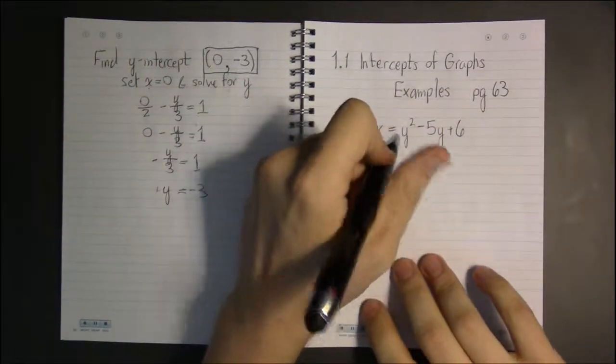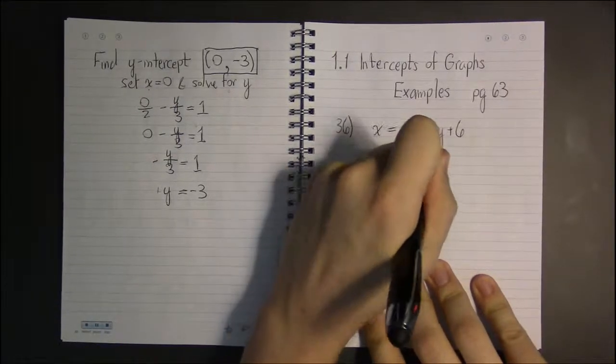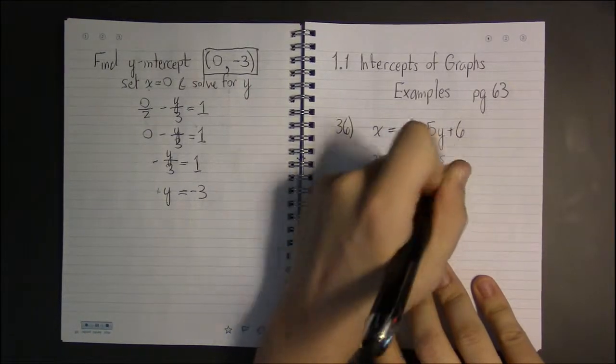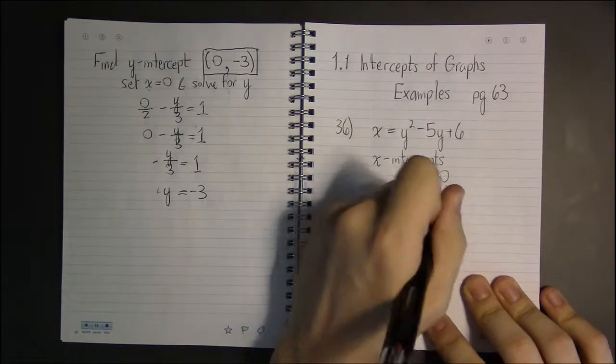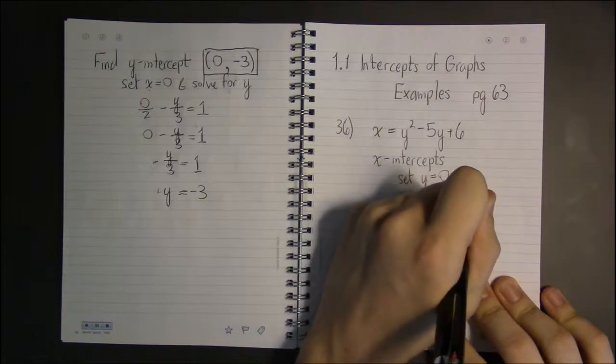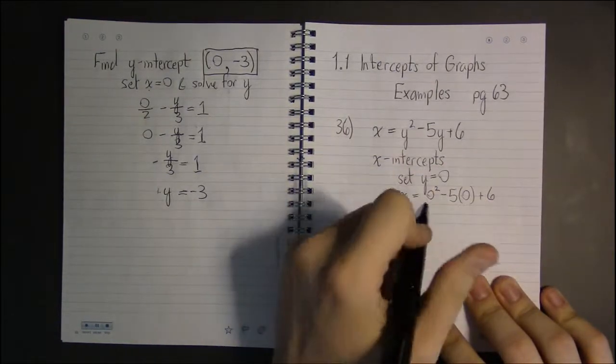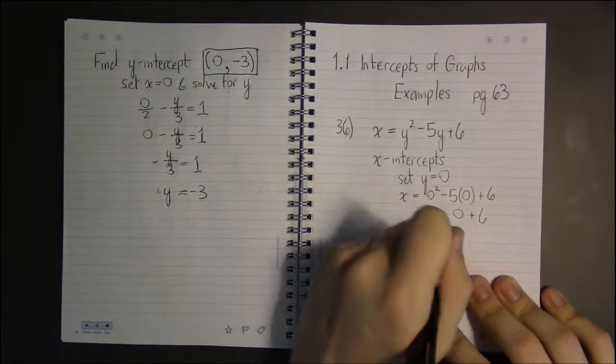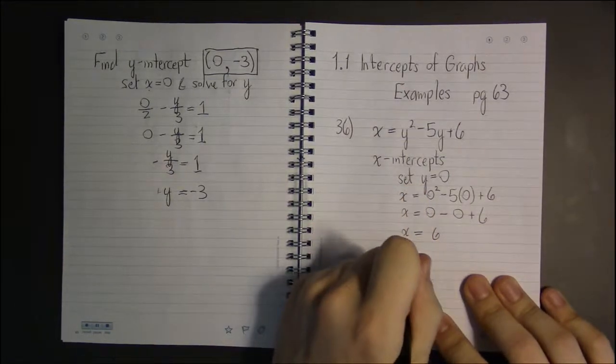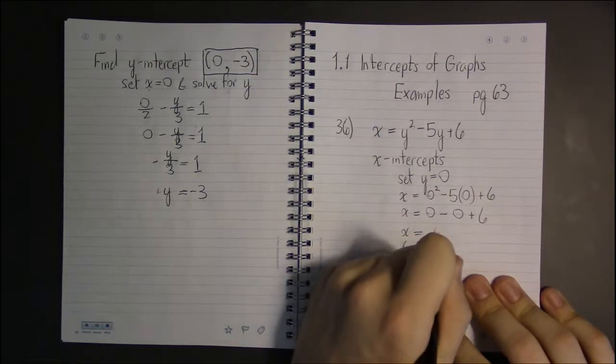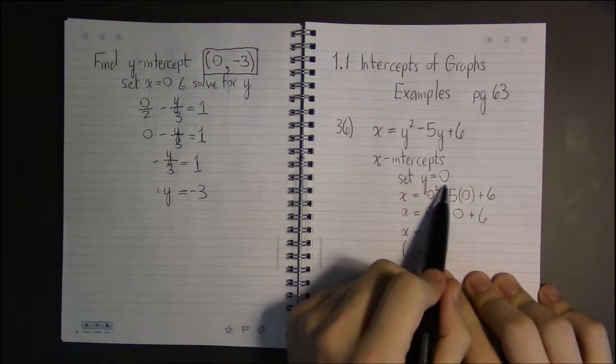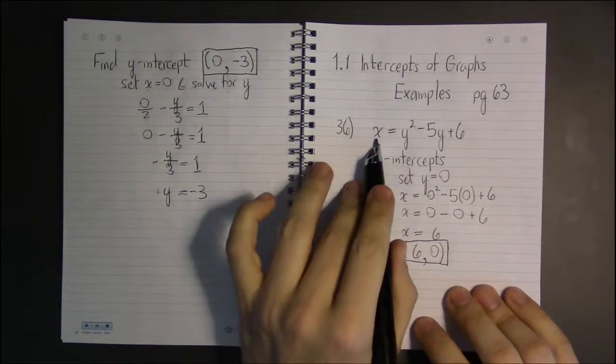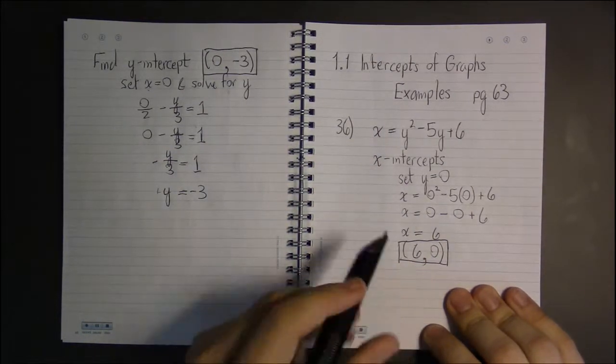Now, we start off by finding the x-intercepts. So to find x-intercepts, we set y equal to 0 and solve for x. So we have that x equals 0 squared minus 5 times 0 plus 6. 0 squared is just 0, 5 times 0 is just 0, plus 6. 0 minus 0 is 0, and 0 plus 6 is just 6. So we have x equals 6, which means this is the x-intercept, where y equals 0, x equals 6. This is the only place where the graph of this equation will run through this point on the x-axis.